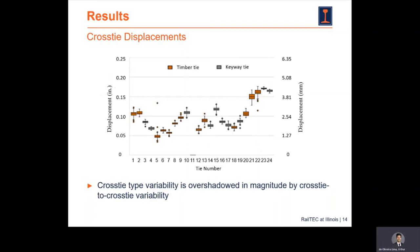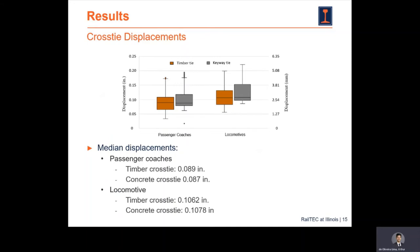Looking at the summary of combined results for each tie type, broken down by passenger coaches and locomotives, the median displacements are essentially the same for both timber and keyway ties: 0.089 and 0.087 inches respectively for passenger coaches, and approximately 0.1 inches under locomotives. The results are effectively the same under both types of wheel loads.